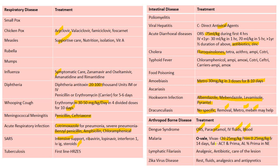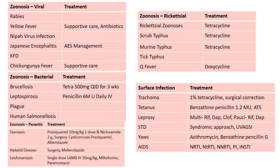Malaria: P. ovale and P. vivax treated with chloroquine 25 mg per kilogram and primaquine 0.25 mg per kilogram for 14 days. P. falciparum treated as malaria ICT — artemisinin combination therapy; primaquine should also be given; in northeastern states, artemisinin combination therapy with primaquine. Lymphatic filariasis: analgesics, antibiotics, and care of the lesion. Zika virus: rest, fluids, analgesics, and antipyretics. Yellow fever: supportive care; no specific drugs. Japanese encephalitis: AES management protocol.